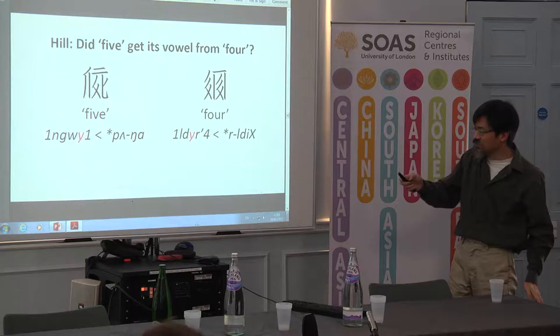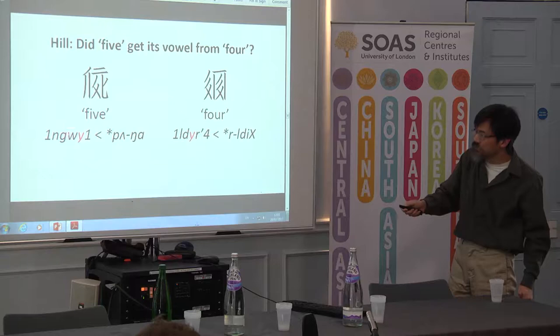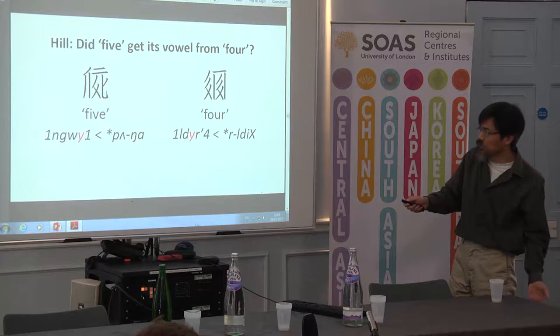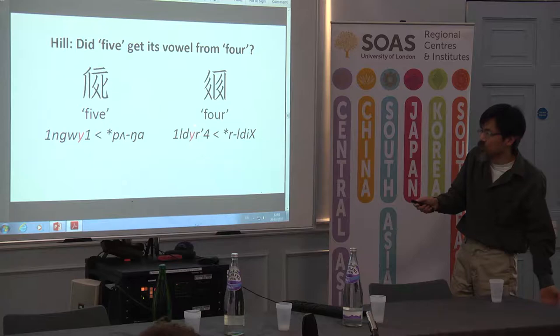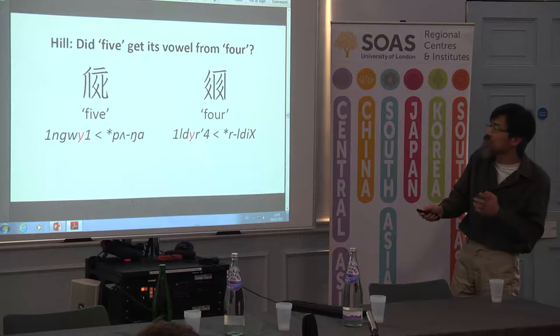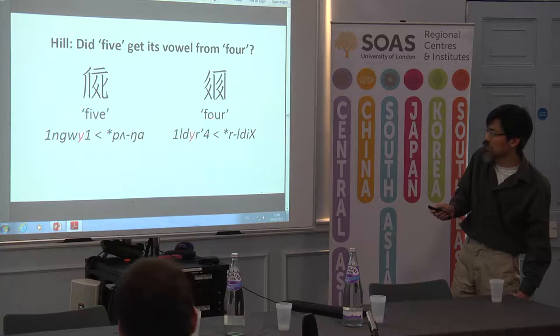I thought there might be something to Nathan's suggestion because both four and five have the symbol Y. But there are problems: they have different grades, and four also has a retroflex vowel — something like a retroflex U — along with a mysterious vowel quality I have yet to identify. So yes, they're both romanized with Y in my system, but they're not really the same rhyme. This is Y and this is Yr, or something like that.